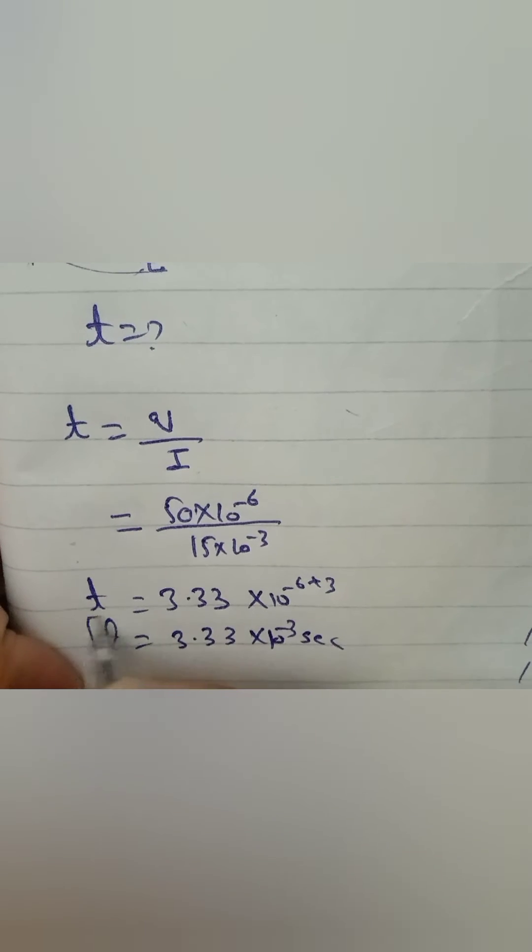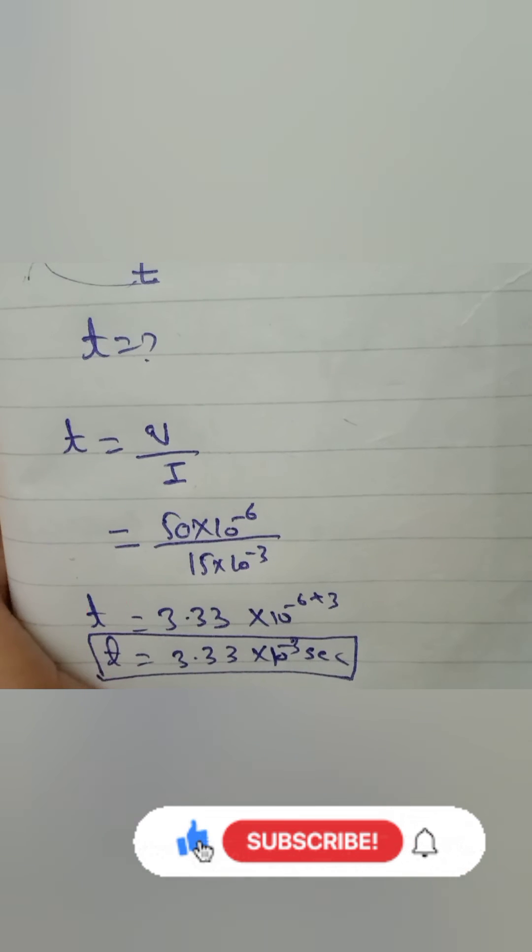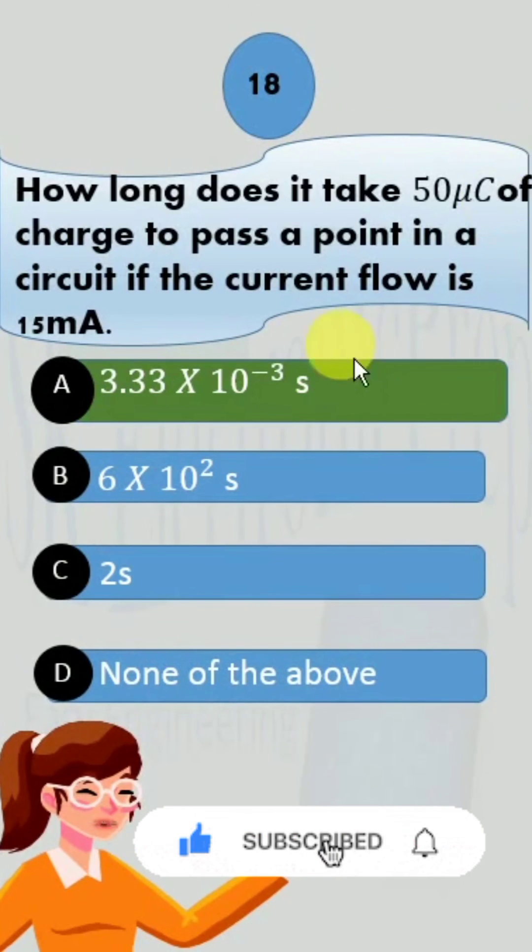So the answer is t is equal to 3.33 into 10 to the power minus 3 seconds, which is option number A.